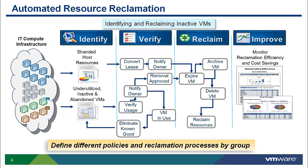Stage 2: Verify. Now that machines have been identified, they must first be validated before being reclaimed and reused. The vCloud Automation Center has built-in workflows to help customers through the process. These workflows include the ability to notify owners, convert machines to leases, and provide the necessary approval processes.